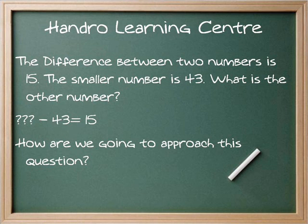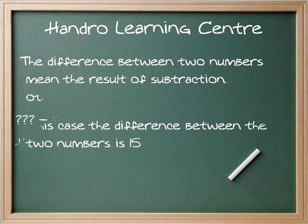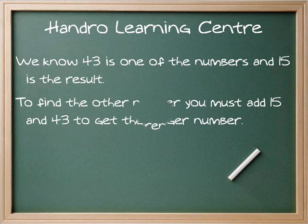How are we going to approach this question? The difference between two numbers means the result of subtraction. In this case, the difference between the two numbers is 15. We know 43 is one of the numbers and 15 is the result.